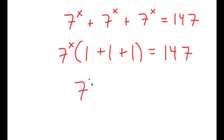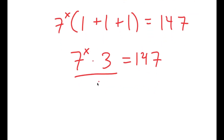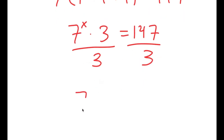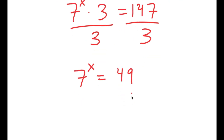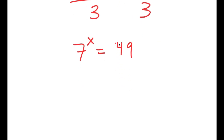So 7 to the power of x times 3 is equal to 147. Now from here, I'm going to divide both sides by 3. So 7 to the power of x is equal to 147 divided by 3 — sorry, not 45 — that's 49. So I get 7 to the power of x is equal to 49.